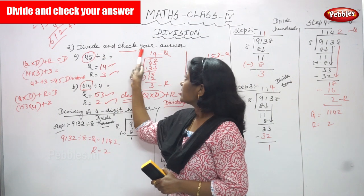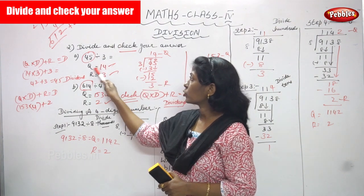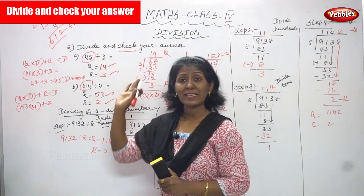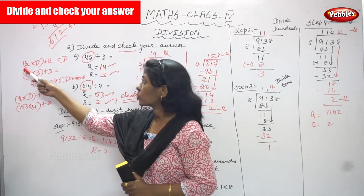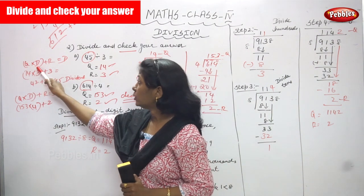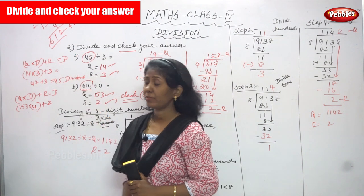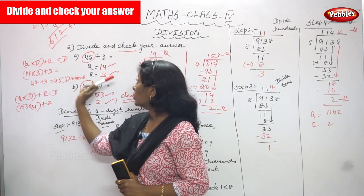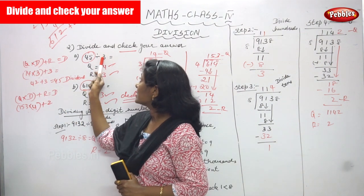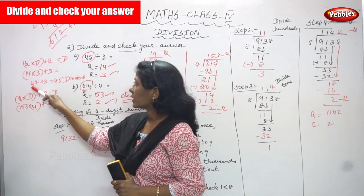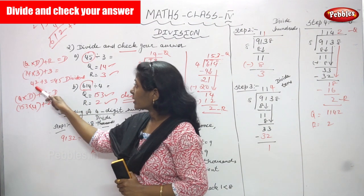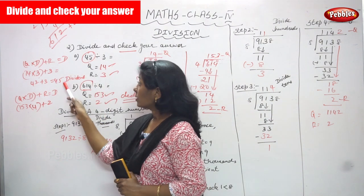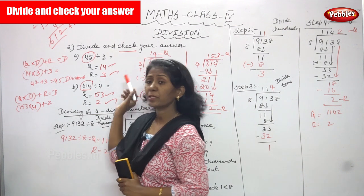Now divide and check your answer. 45 divided by 3 gives quotient 14 and remainder 3. The check method formula is: quotient into divisor plus remainder gives the dividend. 14 into 3 gives 42. 42 plus 3 gives 45 — the dividend. So the quotient and remainder are both correct.